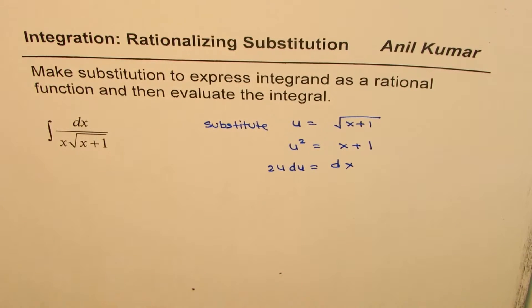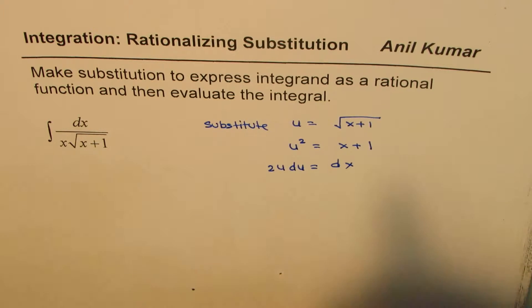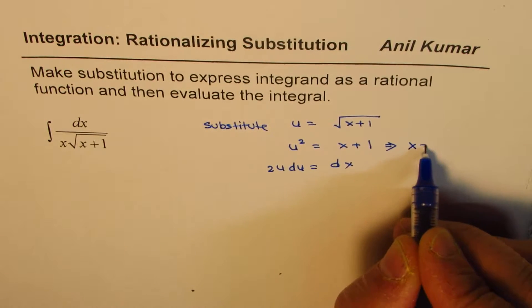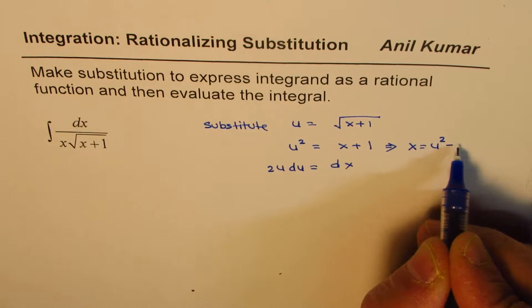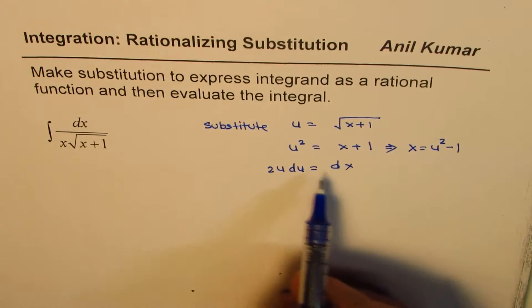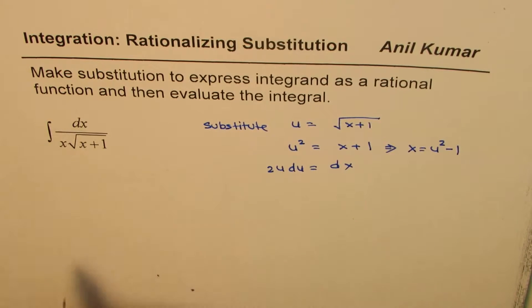We have this term x also here so we can rearrange this and from here we can write x is equals to u square minus 1. Does it make sense to you? So now I think we can substitute these things and see what do we get.